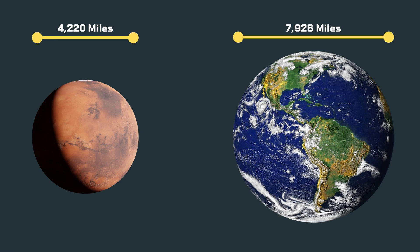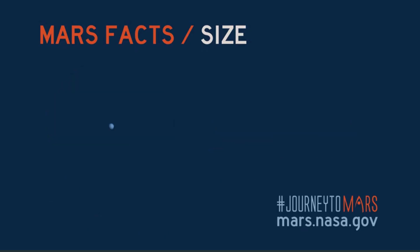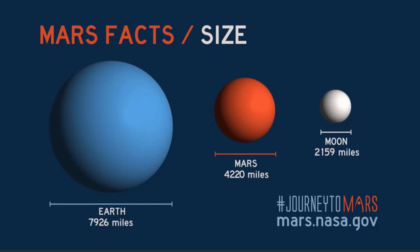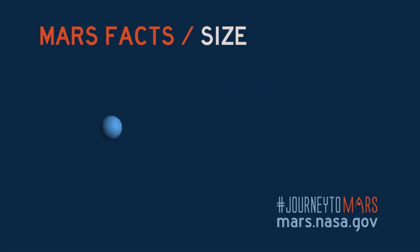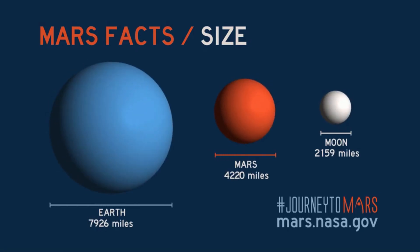Number one: The diameter. The diameter of Earth is 7,926 miles, while the diameter of Mars is 4,220 miles. In comparison, the diameter of our Moon is approximately 2,159 miles.